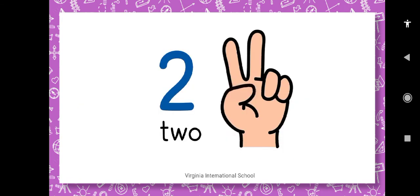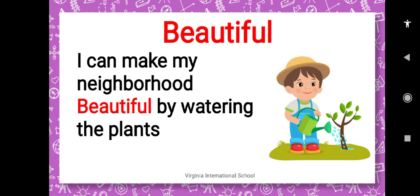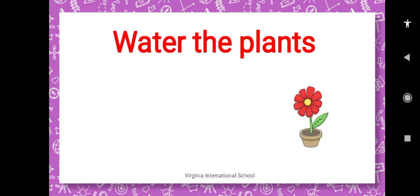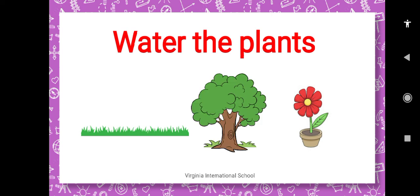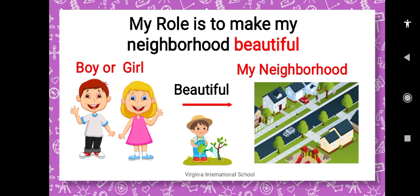Number two is to keep my neighborhood beautiful by watering the plants. What plants can I water? I can water a flower, the grass, or the trees. My role is to make my neighborhood beautiful. Every boy and girl should keep their neighborhood beautiful by watering the plants.